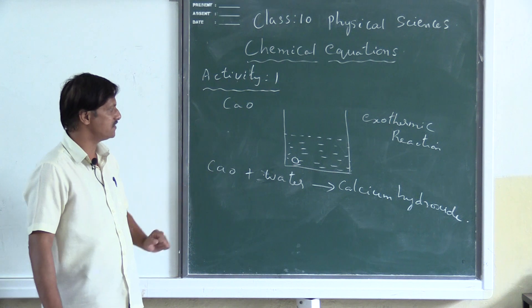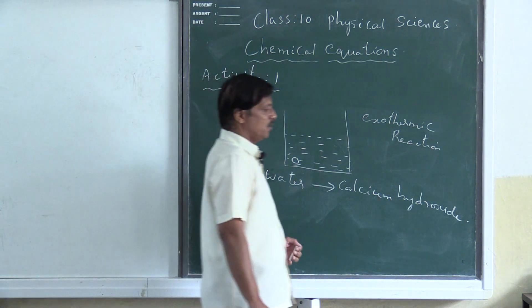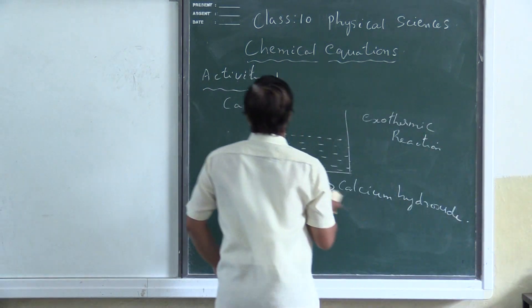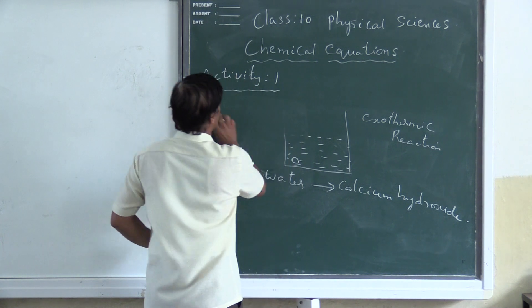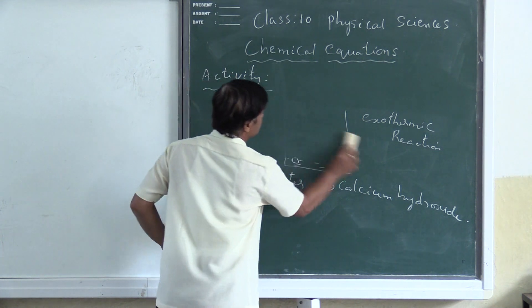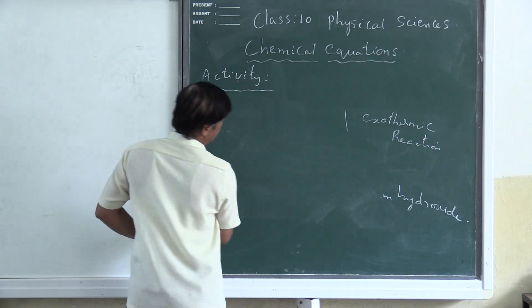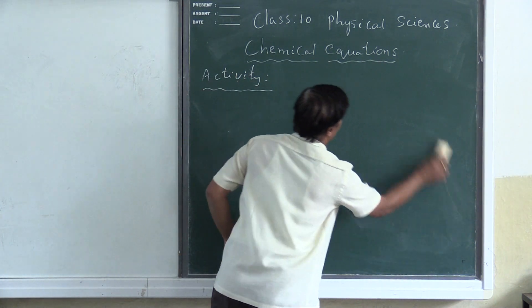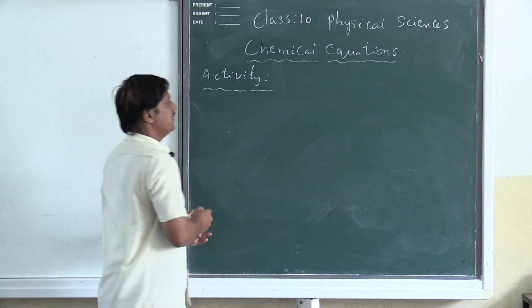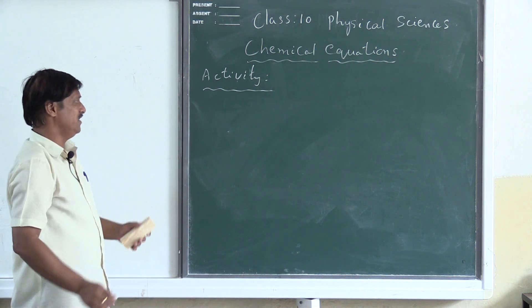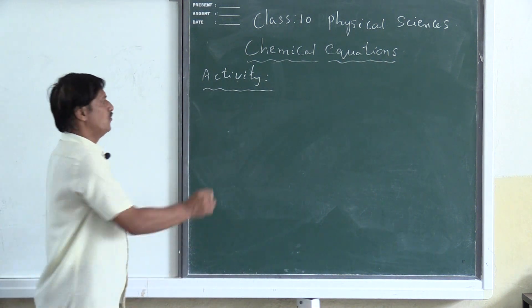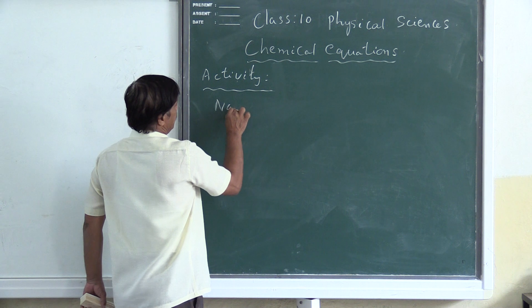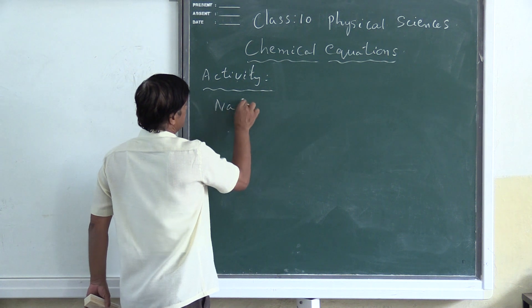In the same way, let us go for Activity 2. In this activity, we will take two substances: one is sodium sulfate and the other is barium chloride.